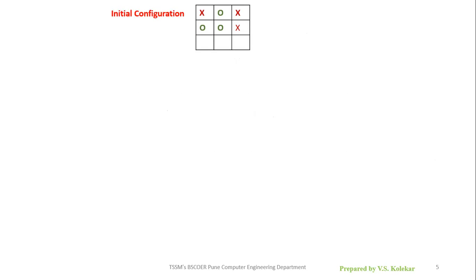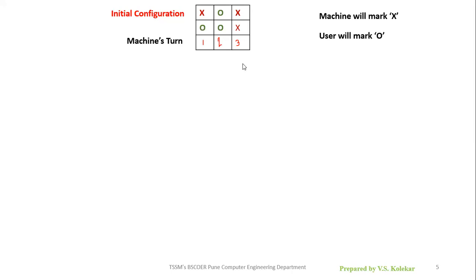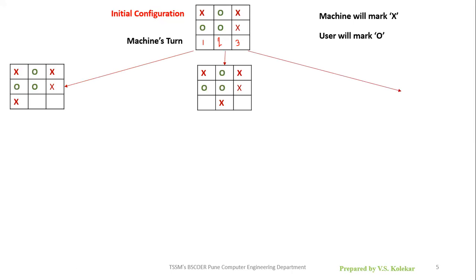Let us consider an initial configuration of the tic-tac-toe game where already three moves have been played by the machine — three X's — and three moves by the user — three O's. The machine marks X and the user marks O. Now it is the machine's fourth turn, so the machine will mark X. There are three possible choices for the machine: it can mark X in the first, second, or third empty cell. Then it will be the user's turn to mark O in an empty cell.